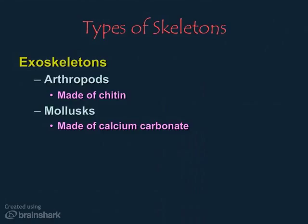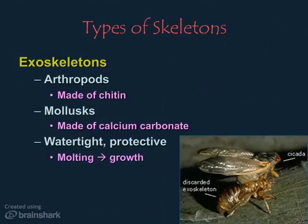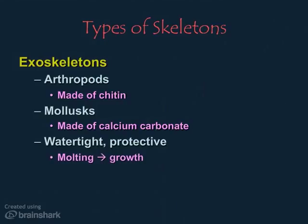Exoskeletons are watertight and protective, as you may know if you remember cutting open the exoskeleton of the crawfish we dissected. Since exoskeletons are very rigid, they restrict the growth of an animal severely, so animals with an exoskeleton must molt in order to grow. One of the most common examples of this are the cicada shells that we find around here in the late summer months.